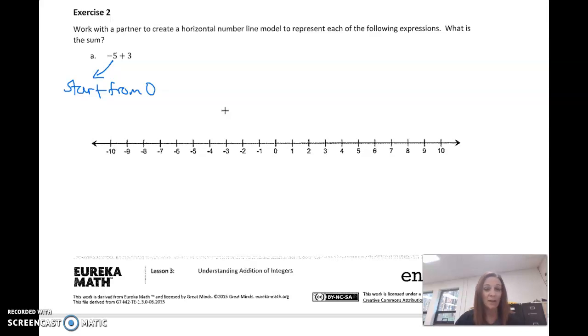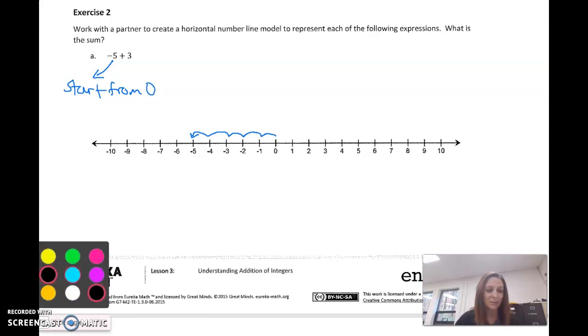Now, remember, if we want, if we're going from zero to negative five, we can do this hops or bump method, but we need to make sure that over top of it, okay, we draw the arrow.